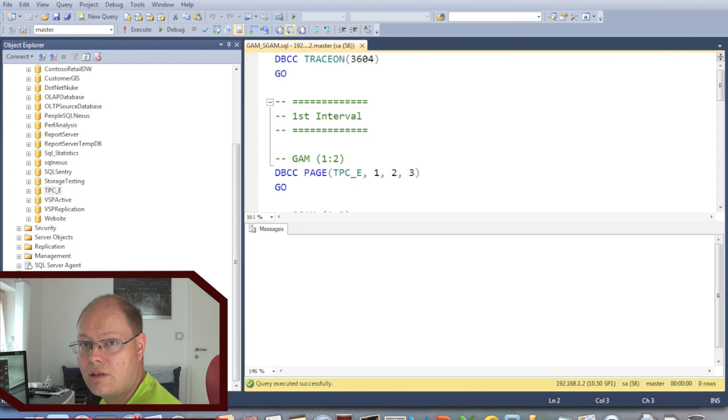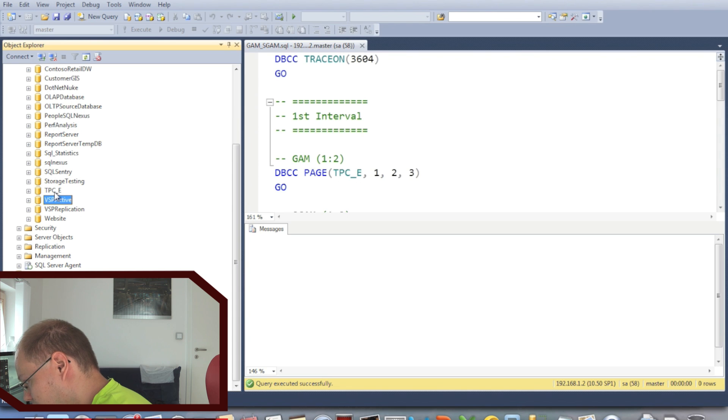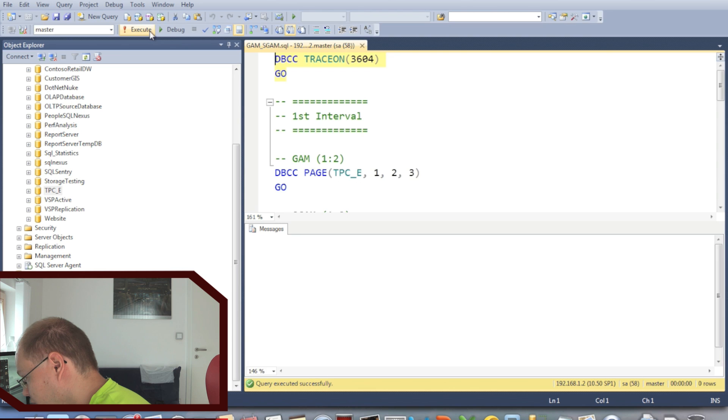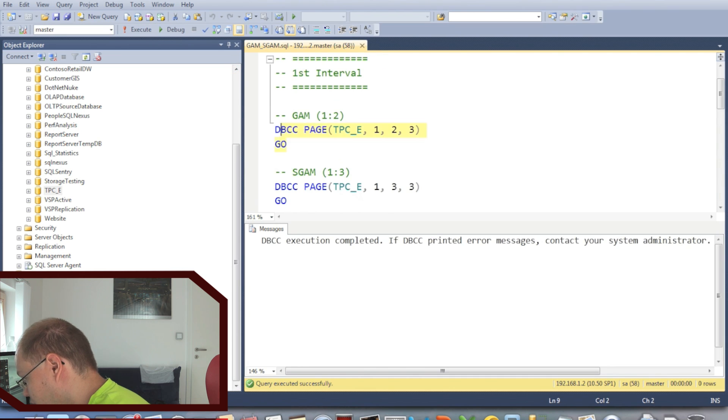As you now know how SQL Server manages extends through GAM and SGAM pages, I want to demonstrate you that concept within SQL Server Management Studio. As you can see here, I have here a database called TPCC-E from the corresponding benchmark, and that database has a large data file of almost 72 GB, which means we will find here plenty GAM and SGAM pages within that file. So again, I am enabling the trace flag 3604, so that we can dump out pages, and in the first step, I am dumping out my first GAM page.